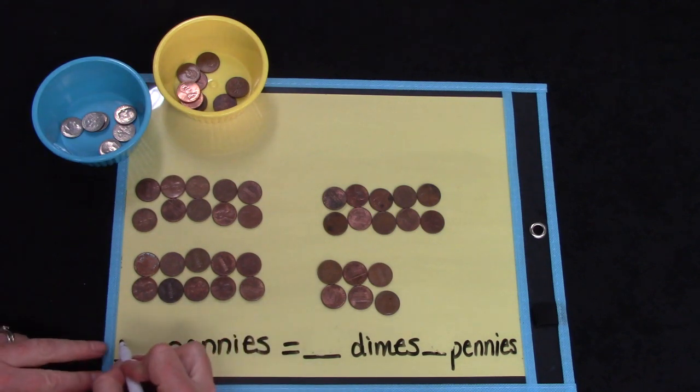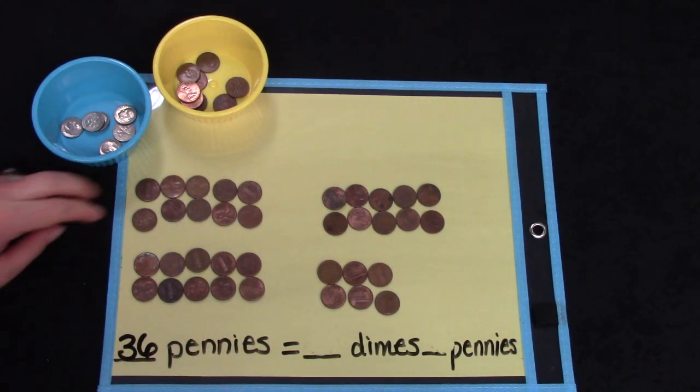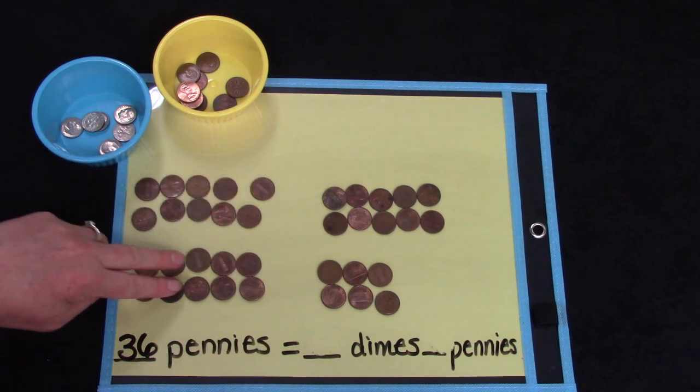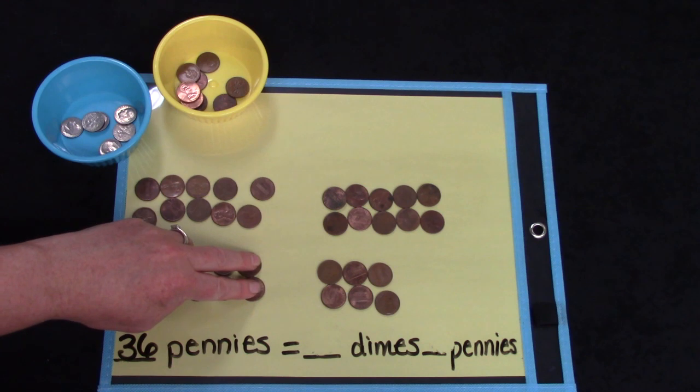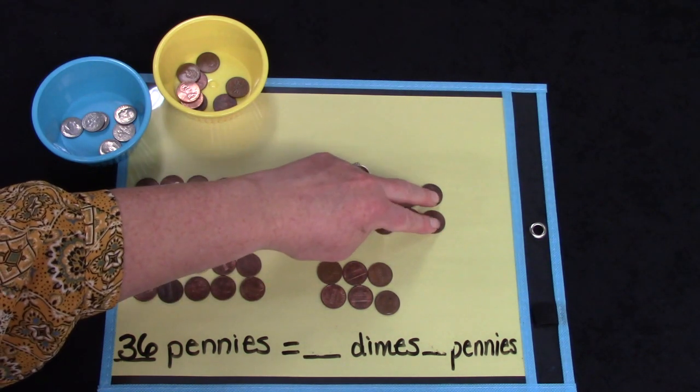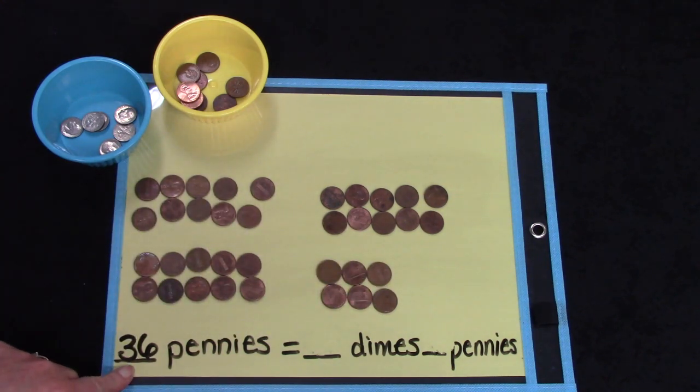I'd like for you to count out 36 pennies. And you can count mine with me. 2, 4, 6, 8, 10, 12, 14, 16, 18, 20, 22, 24, 26, 28, 30, 32, 34, 36. So I have 36 pennies.